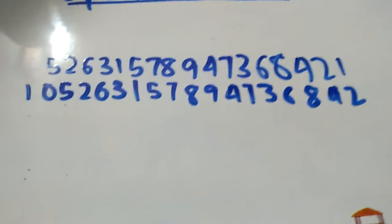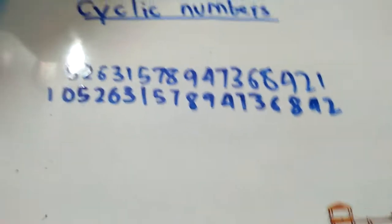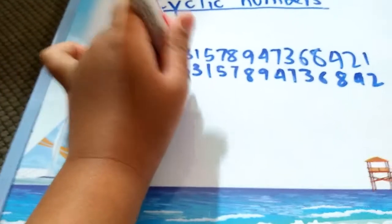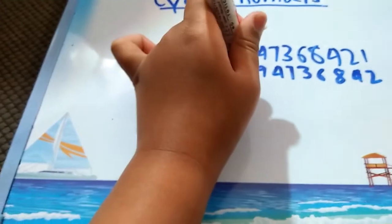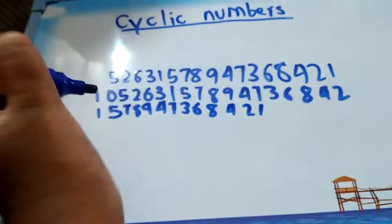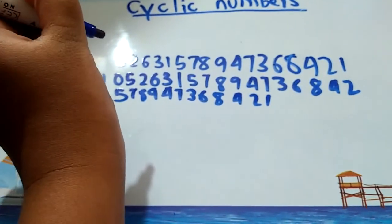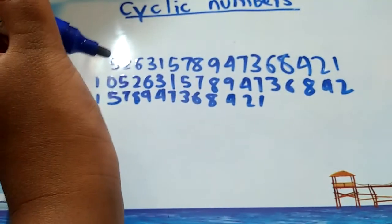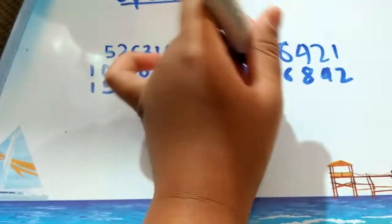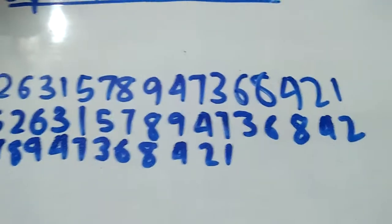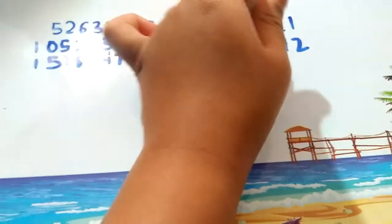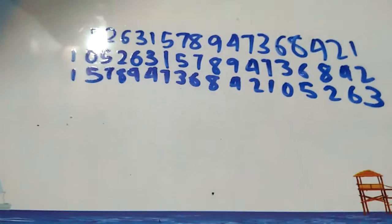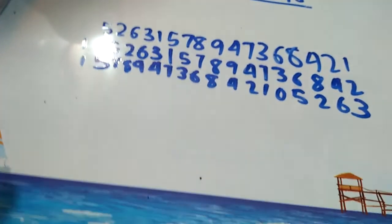This is a cyclic number. I will call Calci later once I complete this. The number is 157894736842 1, and also 052631... Let me check this with 18 multiples.